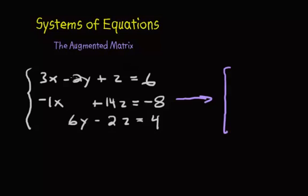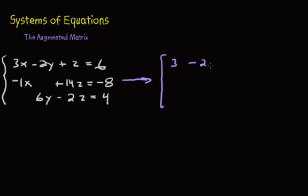And then we're just going to write in the coefficients from our equation. So, we're going to have a 3, a negative 2, a 1, and a 6. So, that's from our first line. And then we're going to have a negative 1. See how there's no y here? That's fine...